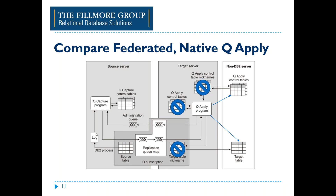With the native QApply, the apply control table nicknames and target table nicknames all go away — they are not needed. To use the federated server you need a local DB2 database containing metadata like wrappers, servers, and nicknames, all of which needs to be maintained and backed up. That complexity goes away because the QApply program on the target server can write directly to Oracle control tables located in the Oracle target database, and to the target application tables themselves — audit, finance, logistics, personnel, whatever you want to replicate. This works for Oracle targets including RAC, Exadata, and standard Oracle.